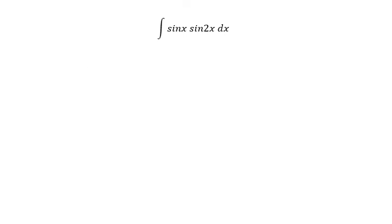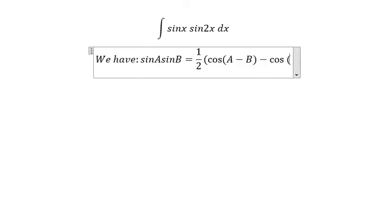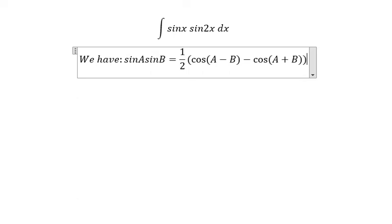We have sine A multiplied with sine B equals 1 over 2 cosine A minus B minus cosine A plus B. So we will apply this formula for this one.